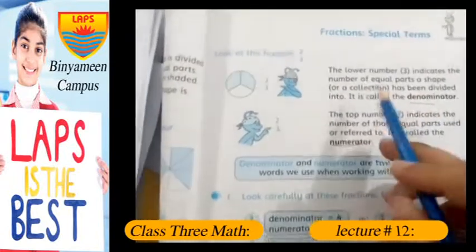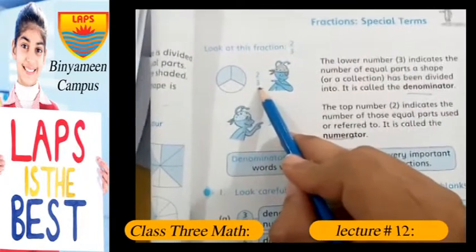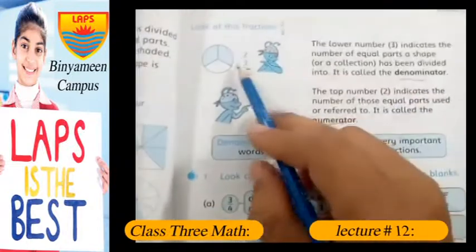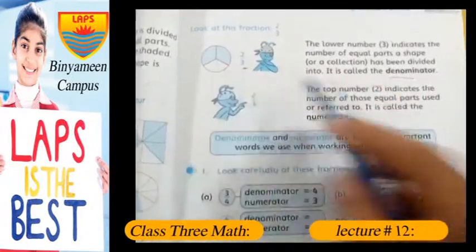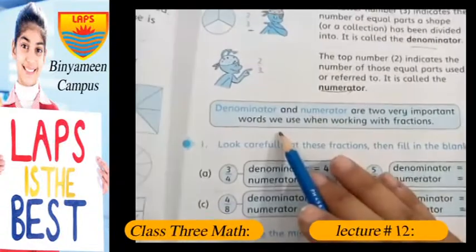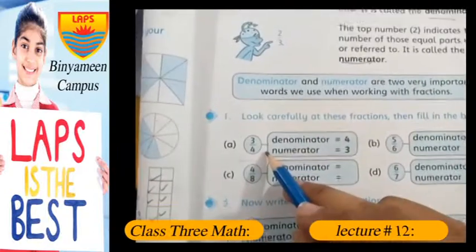The lower number 3 indicates like this shape here - it has three equal parts, so 3 is written below. It is the denominator. And the two parts which are actually shaded represent the numerator. Denominator and numerator are two very important words we use when working with fractions.